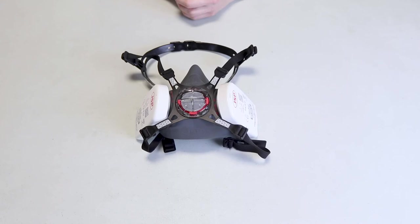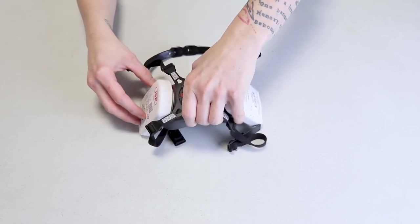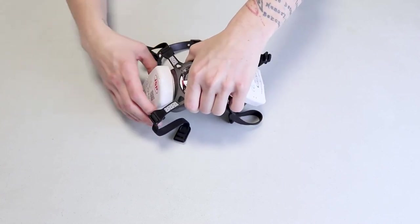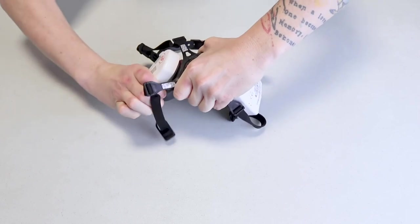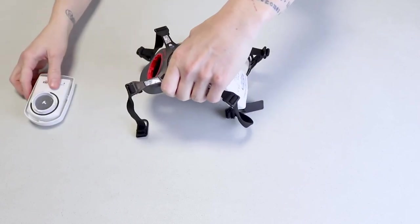So to remove the filters and replace them, it's just the opposite. All we're going to do is grab the mask there and turn it anticlockwise from the full colored triangle to the half colored triangle. We twist and then that comes off.